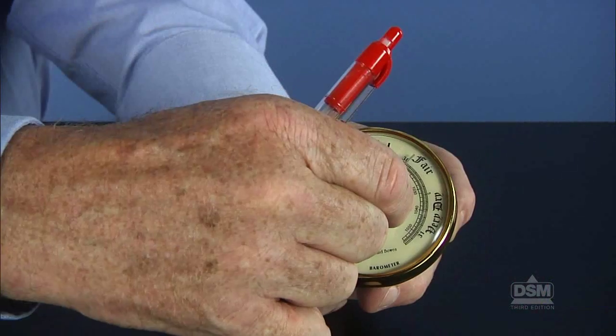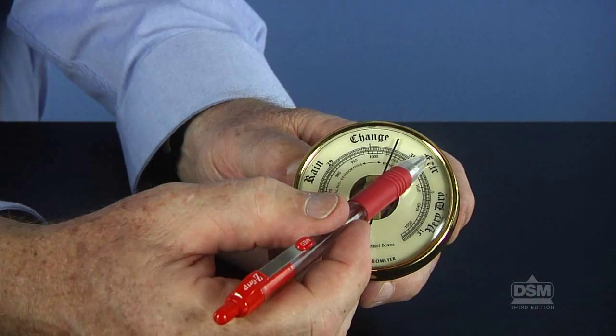Later, when you look at the barometer, the indicator pointer may have moved, but the handset pointer will still be where you previously positioned it. This allows you to record any changes in barometric pressure.